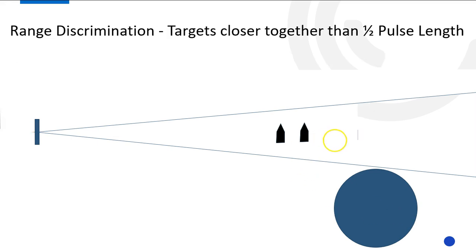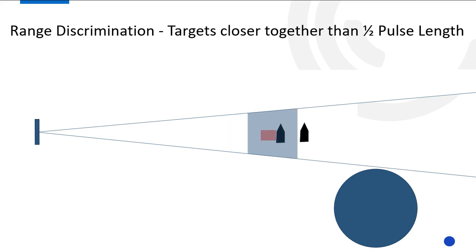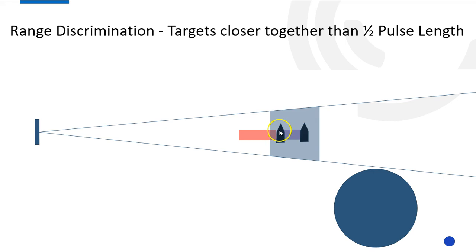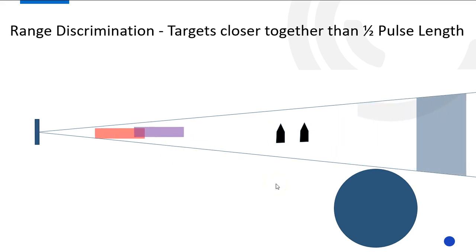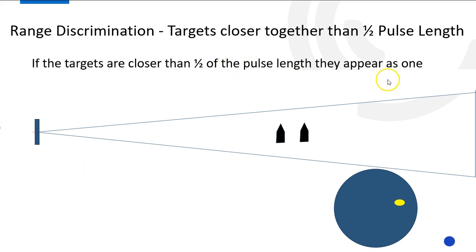But what happens if the targets are closer together — less than half a pulse length? The pulse hits the first target, an echo starts to generate and gets longer, but the leading edge has already hit the second target before the trailing edge passes the first. The two echoes overlap. So when the return gets back to the radar, it looks like one big target. If targets are closer than half the pulse length, they appear as one target.